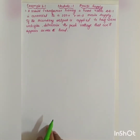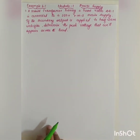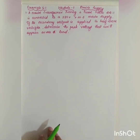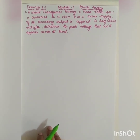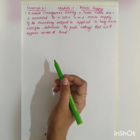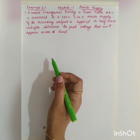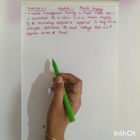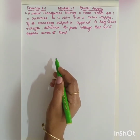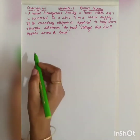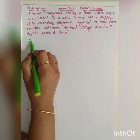The next problem is example 6.1. A mains transformer having a turns ratio 44 to 1 is connected to a 220 volt RMS main supply. If the secondary output is applied to a half wave rectifier, determine the peak voltage that will appear across the load.